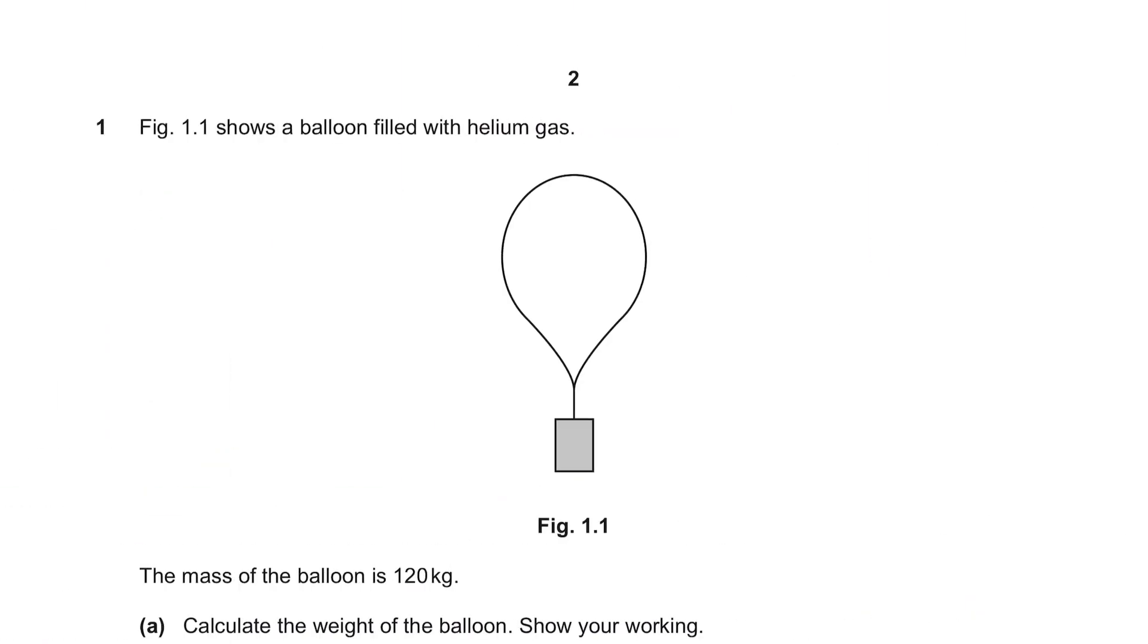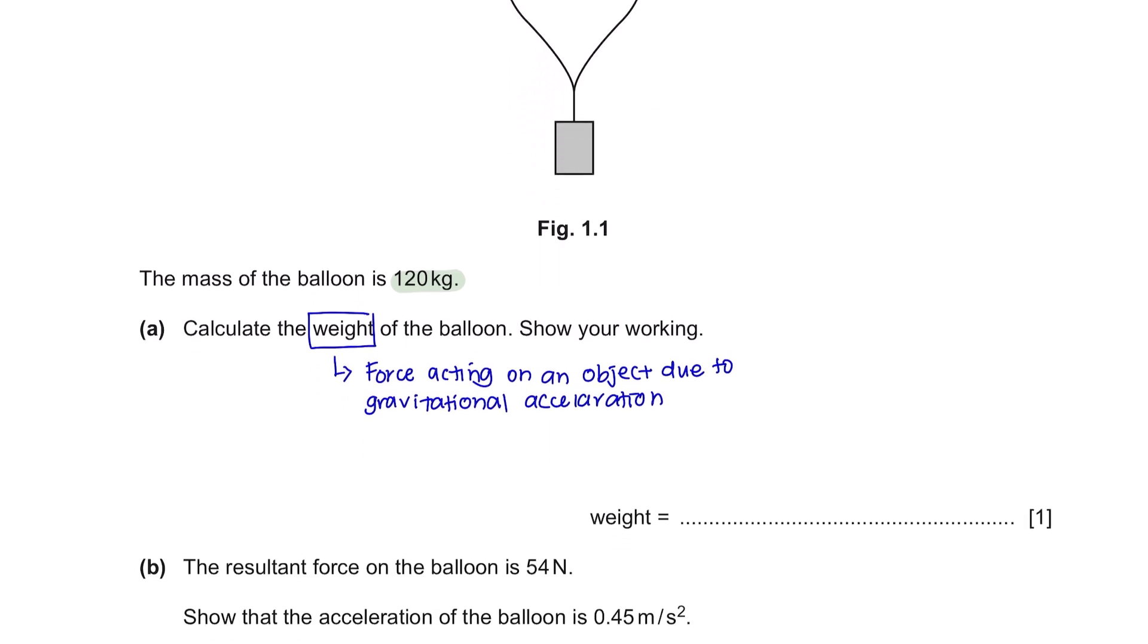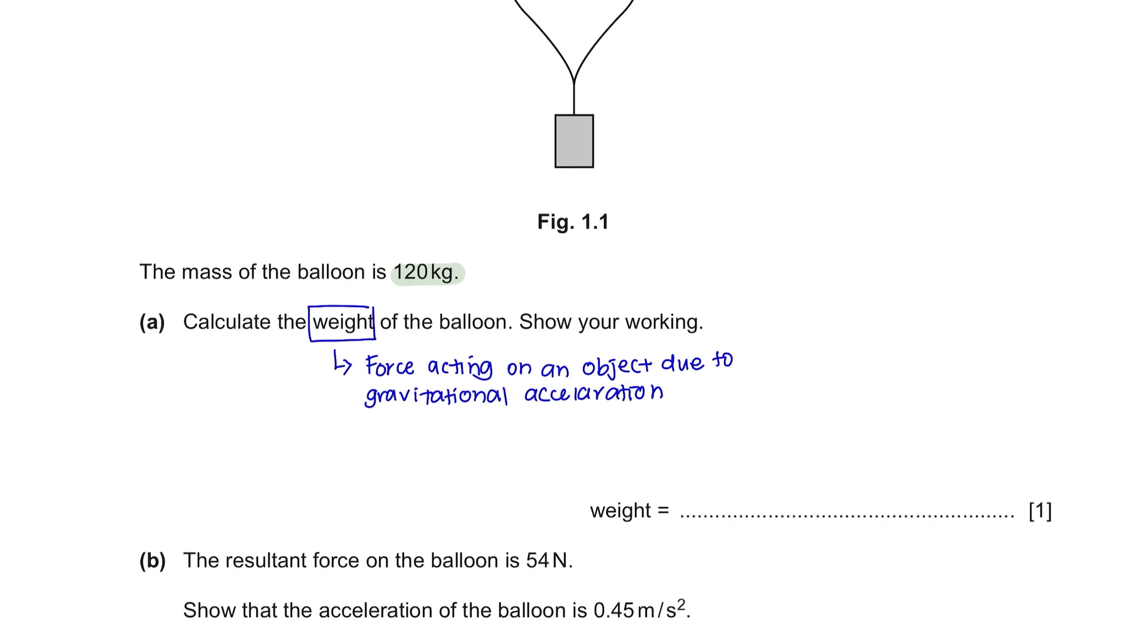Question 1. Figure 1.1 shows a balloon filled with helium gas. The mass of the balloon is 120 kg. Question A: Calculate the weight of the balloon, show your working. Weight is the force acting on an object due to gravitational acceleration. In order to calculate weight, we can use the formula weight equals mass multiplied by the acceleration of freefall.